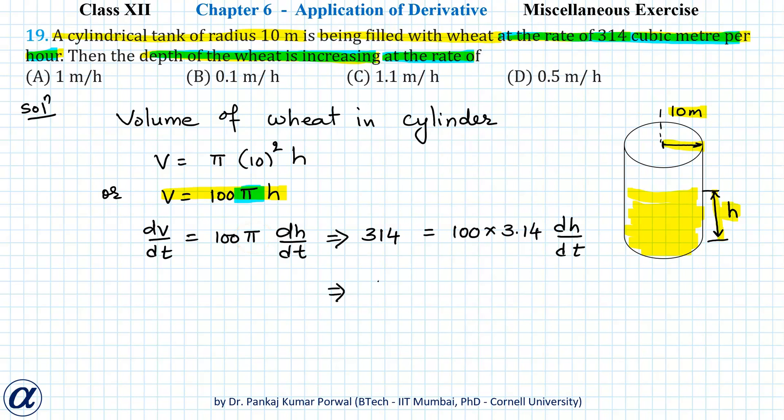This gives me dh/dt = 314/(100 × 3.14) = 314/314 = 1 meter per hour. So our answer is correct.